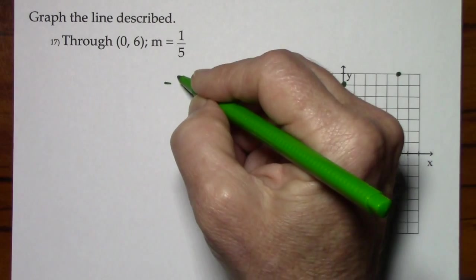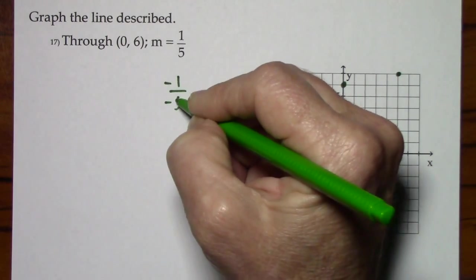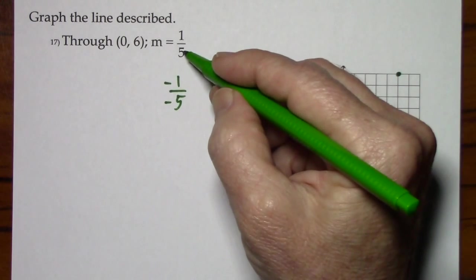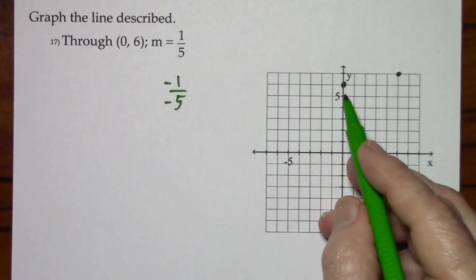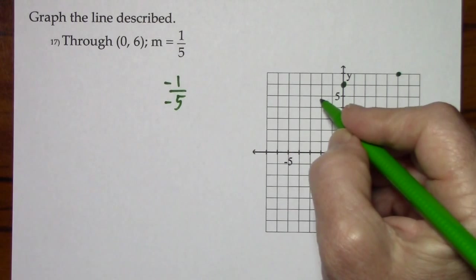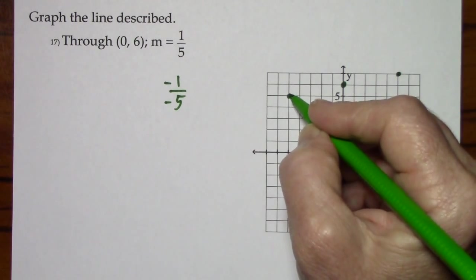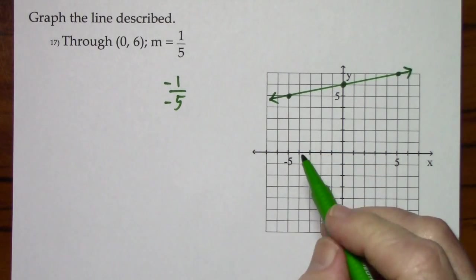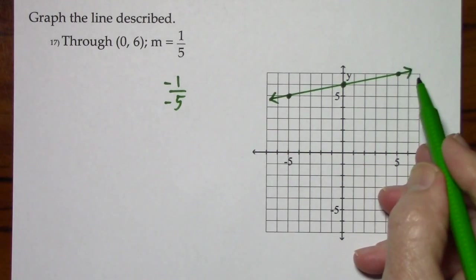Notice that a negative 1 over a negative 5. This would clean up to a positive 1 fifth. So to stay on the graph, I can go down 1 and back 5. You don't have to put this third point, but I like to have three points to draw the line.